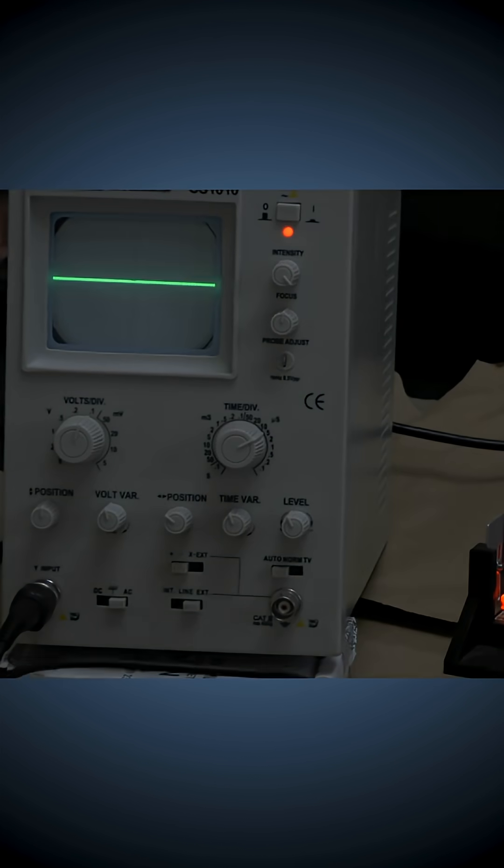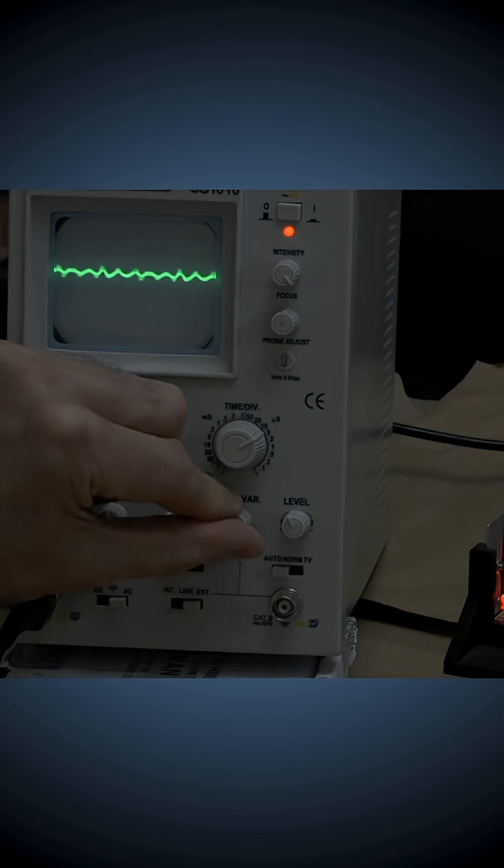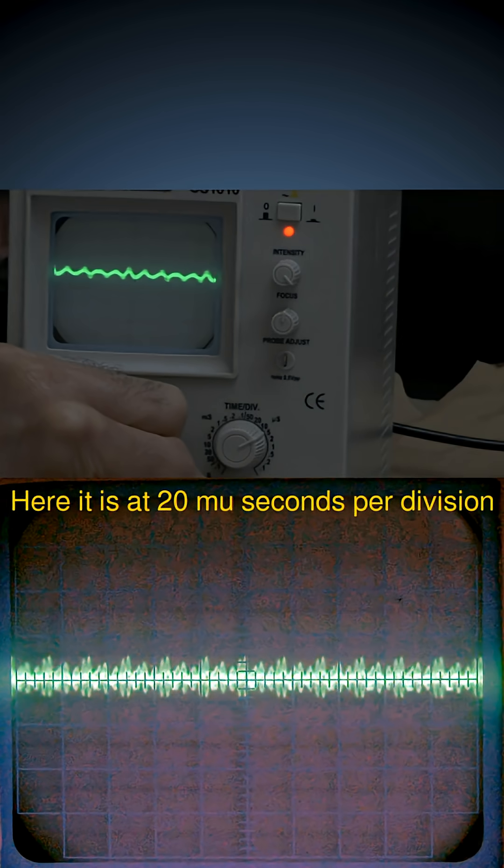And there's still a signal there, but it's greatly reduced. So if I just now adjust this, you'll see that peak-to-peak difference is very, very much smaller. It's about just less than one large division.